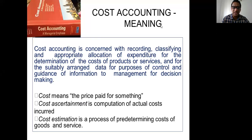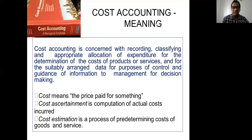There are three different terms to understand: Cost means the price paid for something. Cost ascertainment is the determination of actual cost incurred. Cost estimation is the predetermination of the cost of goods and services. For example, if it cost me 10 rupees to purchase a pen, that 10 rupees is my cost but the selling price of the seller. Cost ascertainment determines actual cost incurred, while cost estimation predetermines cost.